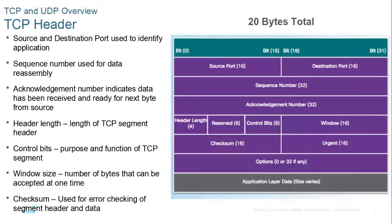The TCP header contains source and destination ports, which are 16-bit values that identify the application. The well-known port for HTTP is port 80. So if you want to reach the web server on a company server — which might also be running email, DNS, and DHCP — you put destination port 80 in the packet. Your web browser creates the segment with port 80 to attract the attention of the HTTP web server.